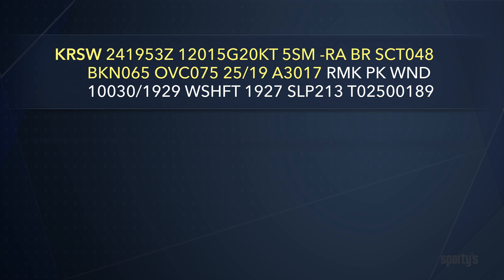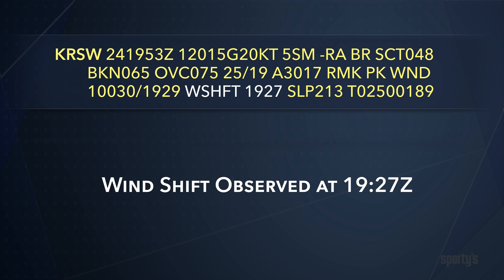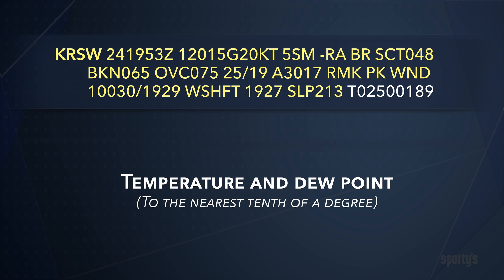The altimeter setting may be followed by a remarks section. In our example, the weather observer recorded a peak wind of 30 knots from a direction of 100 at 1929 Zulu. A wind shift was observed a couple of minutes prior at 1927. The next two numbers are only included from certain reporting stations and represent sea-level pressure in hectopascals and a more precise report of the current temperature and dew point to the tenth of a degree.